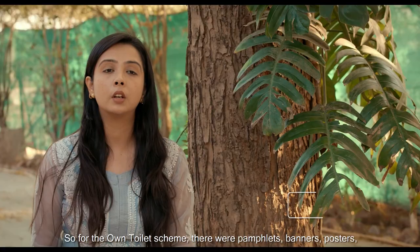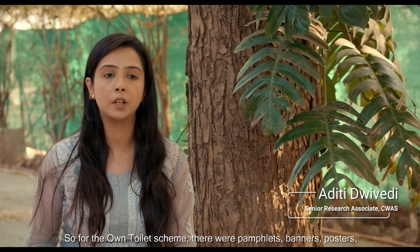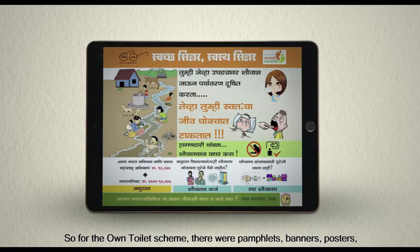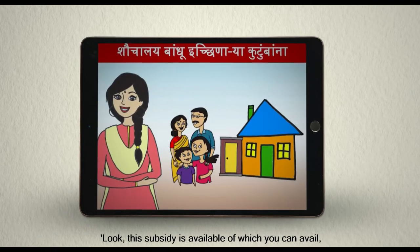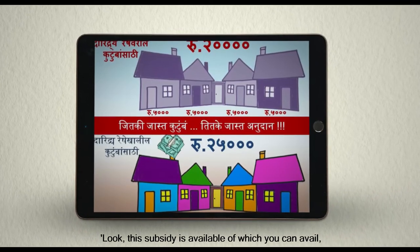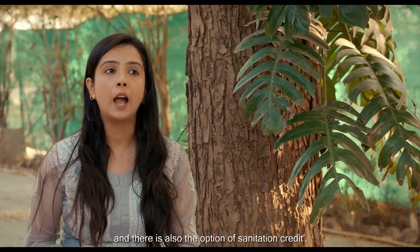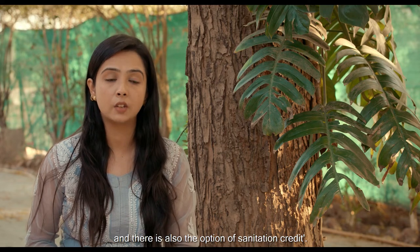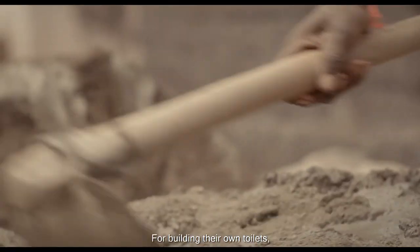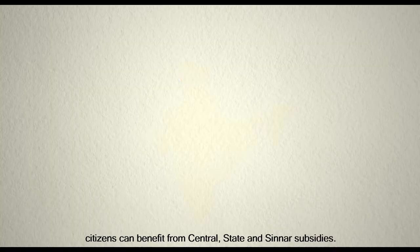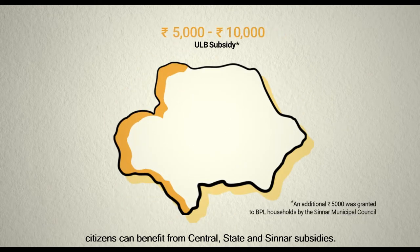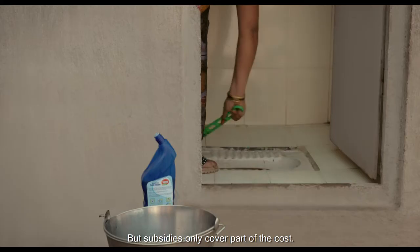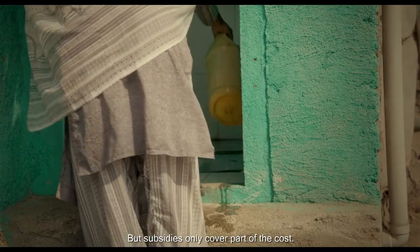For the own toilet scheme, there were pamphlets, banners, posters, videos and jingles promoting the available subsidy, and there was also the option of sanitation credit. For building their own toilets, citizens can benefit from central, state, and Sinar subsidies. But subsidies only cover part of the cost.